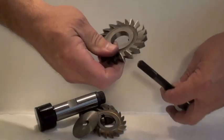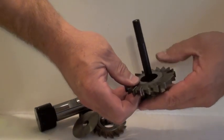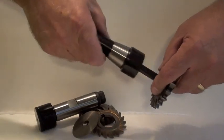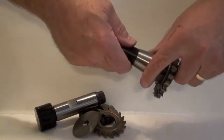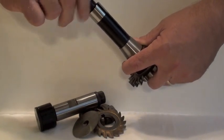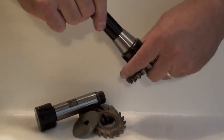Just unscrew the cap to remove the arbor from the holder and place your cutter on the arbor. Then slide the holder back on. Then replace the coupling nut to clamp your cutter.